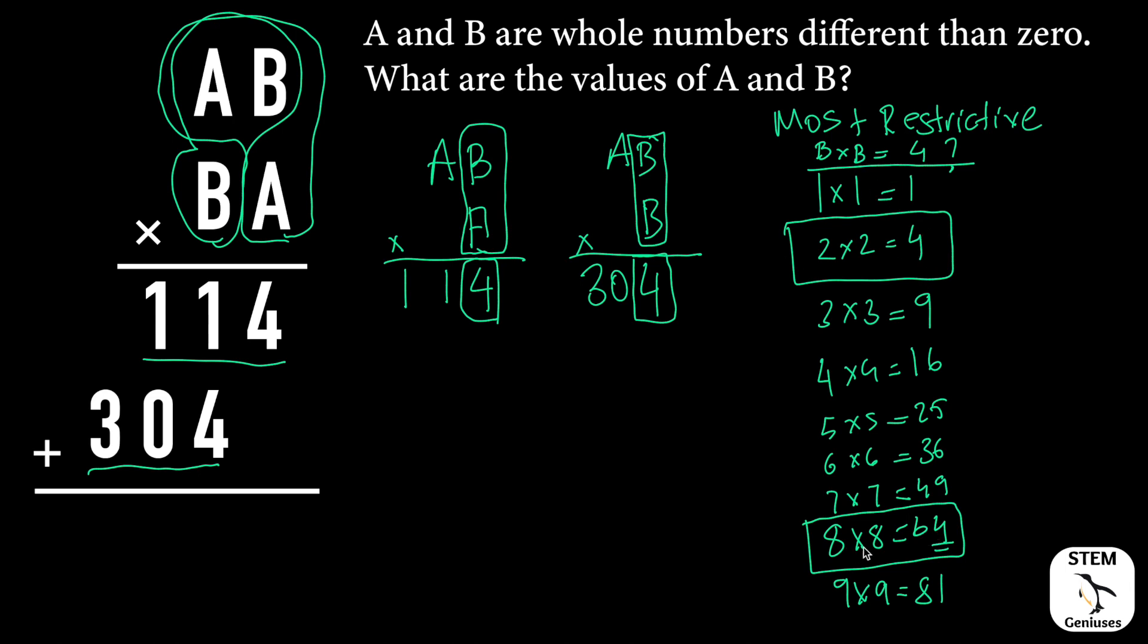It can't be 2. Why? Because when we multiply B with AB, it should generate a two-digit number, 30 basically. Therefore it can't be 4, and we will cross this option. Basically we found B equals 8.